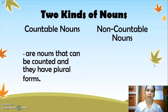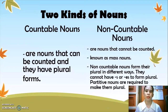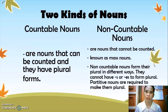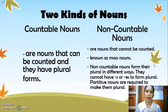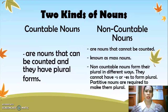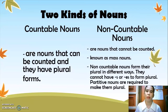The next kind is non-countable nouns. Non-countable nouns are nouns that cannot be counted, also known as mass nouns. Non-countable nouns form their plural in different ways. They cannot have S or ES added to form the plural. So, partitive nouns are required to make non-countable nouns plural.